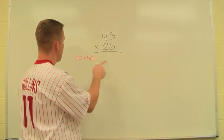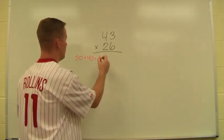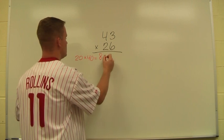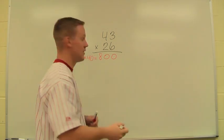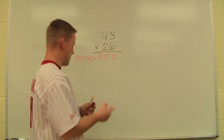We can write it down if we need to. So I do my 20 times 40: 2 times 4 is 8, my 2 zeros, 800. All this work over here should be able to be done mentally, technically. I shouldn't have to do another multiplication problem on the side.